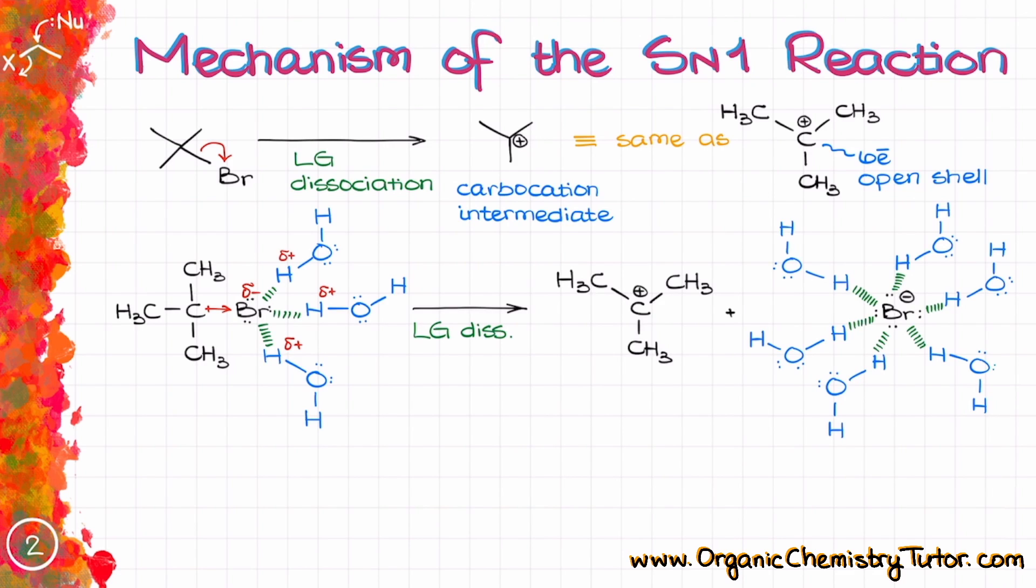SN1 reactions are favored in polar protic solvents like water, alcohols, or acids. And as the leaving group, the bromine in this case, bears the negative charge, or I should say a partial negative charge over here, it attracts the partially positive charged hydrogens from our solvent.